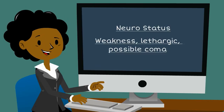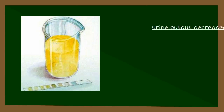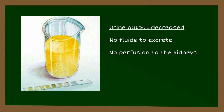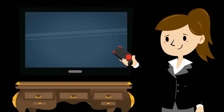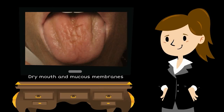For the kidneys, there's going to be a decrease in urine output for two reasons: there is no volume to be excreted, and we're not perfusing, so the kidneys aren't working at full capacity. As for the skin, this patient's skin is going to be dry — dry skin, poor skin turgor, dry mouth, and dry mucous membranes.